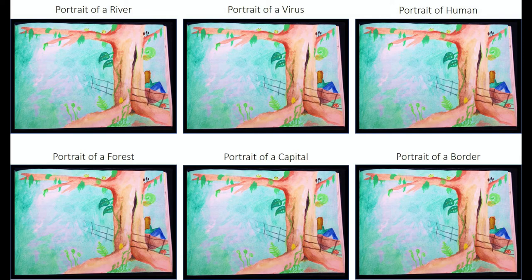What happens to that water happens to the river. I also think of it as the portrait of a virus — because where do viruses like SARS-CoV-2 come from? They often come from forests, from wild spaces.